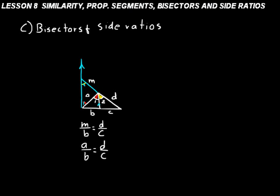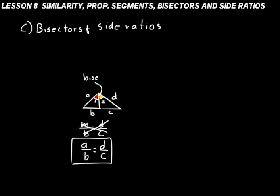When we bisect one of a triangle's angles, the resulting sides are proportional to each other. Removing all construction marks, you can see that when you have a bisecting angle inside a triangle, you end up with proportional sides: A over B is proportional to D over C. That's an important relationship to remember — write it down in your formula notebook. Draw the triangle and identify the bisecting segment that splits the angle into two equal halves.